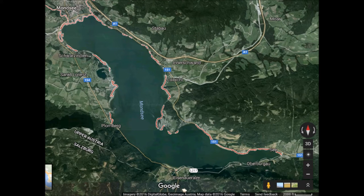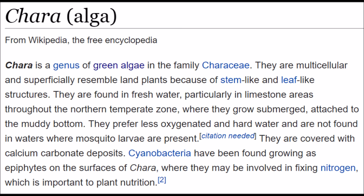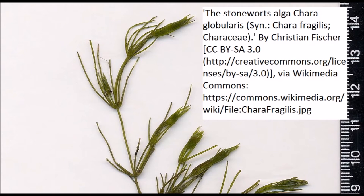The investigators took their ostracods from Chara fragilis macrophytes. According to Wikipedia, Chara is a genus of green algae. They are multicellular and superficially resemble land plants because of stem-like and leaf-like structures. They are found in freshwater, particularly in limestone areas throughout the northern temperate zone, where they grow submerged, attached to the muddy bottom. Cyanobacteria have been found growing as epiphytes on the surfaces of Chara, where they may be involved in fixing nitrogen, which is important to plant nutrition.